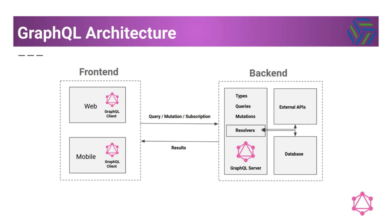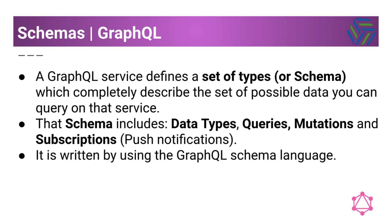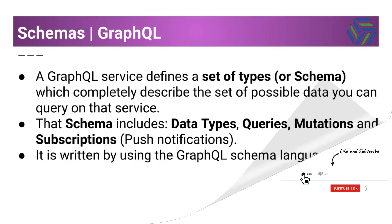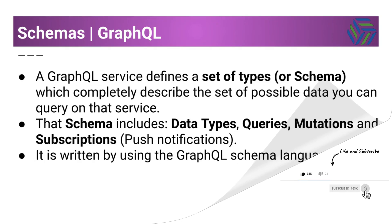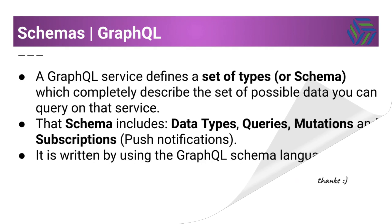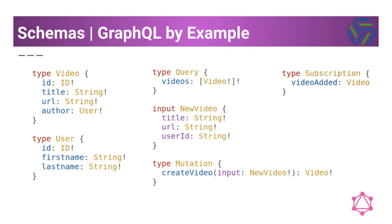We've been talking about queries, mutations, subscriptions, and results. Let's see how we can specify the structure of those elements using GraphQL schemas. A GraphQL service defines a set of types or schema which completely describes the set of possible data you can query on that service. That schema includes data types, queries, mutations, and subscriptions for push notifications, and is written using the GraphQL schema language. Here we have an example of a schema with video and user data types, a query that returns a list of videos, a mutation to create new videos using a new video input, and a subscription to get a push notification when a new video is created.